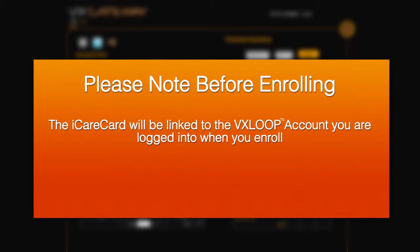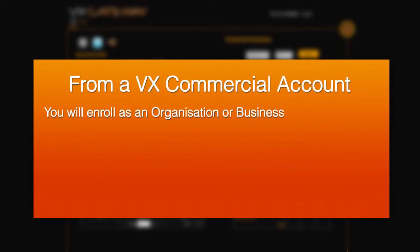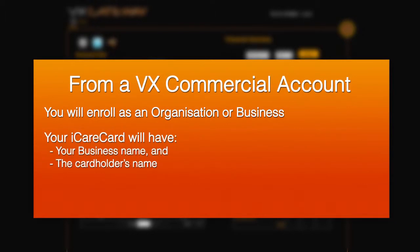The iCare Card is connected to the VX Loop account that you are logged into when you enroll. From a VX Commercial account, you will enroll as an organization or business. Your iCare Card will have the business name and the cardholder's name on it.